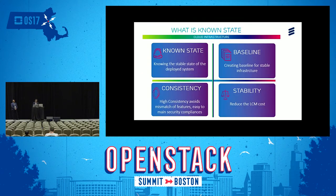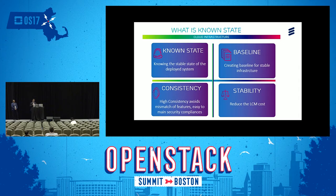What is known state? Known state is basically knowing the stable state of the deployed system. The deployed system consists of many OpenStack and non-OpenStack nodes, and these nodes consist of many components like hardware, softwares, configuration files, kernel BIOS versions, firmwares, and other security level configurations. Known state is basically creating a baseline for a stable infrastructure and deploying this baseline into the infrastructure.